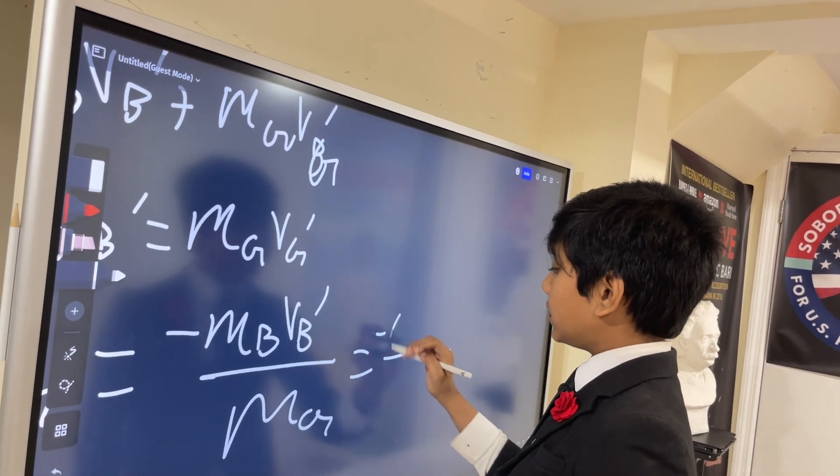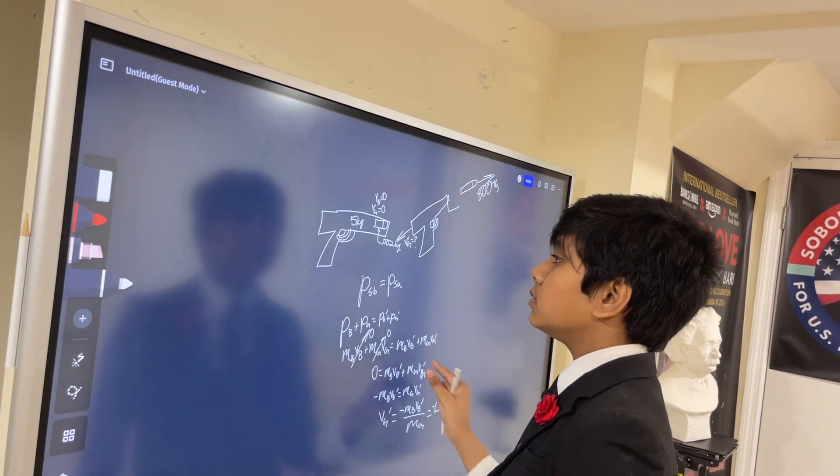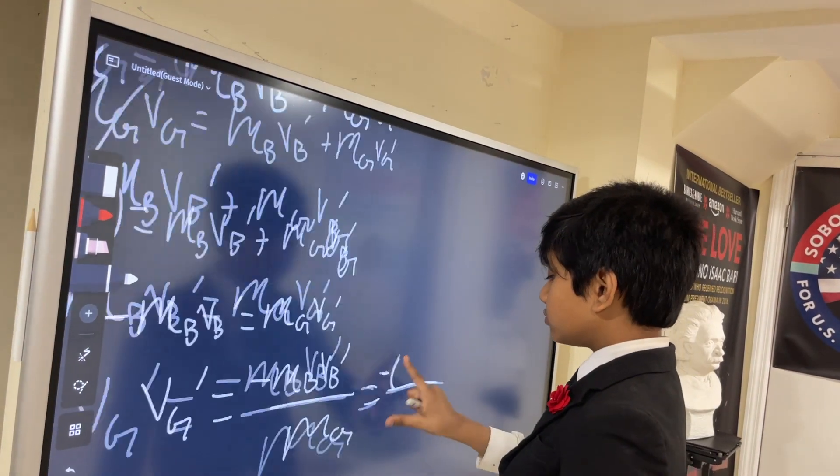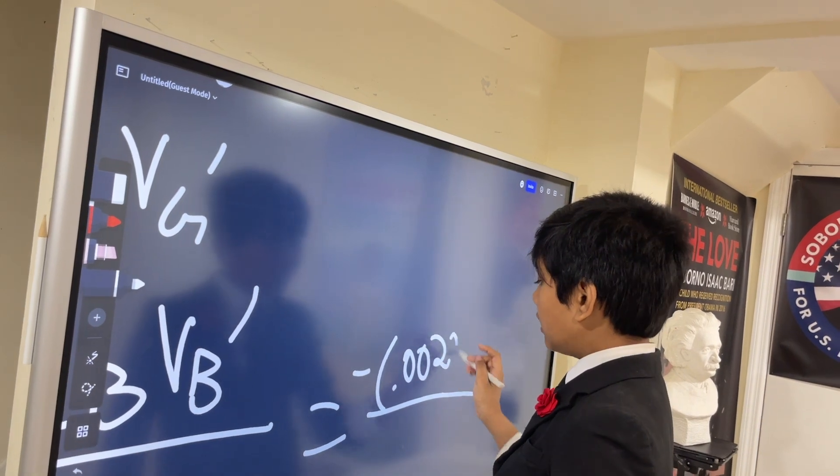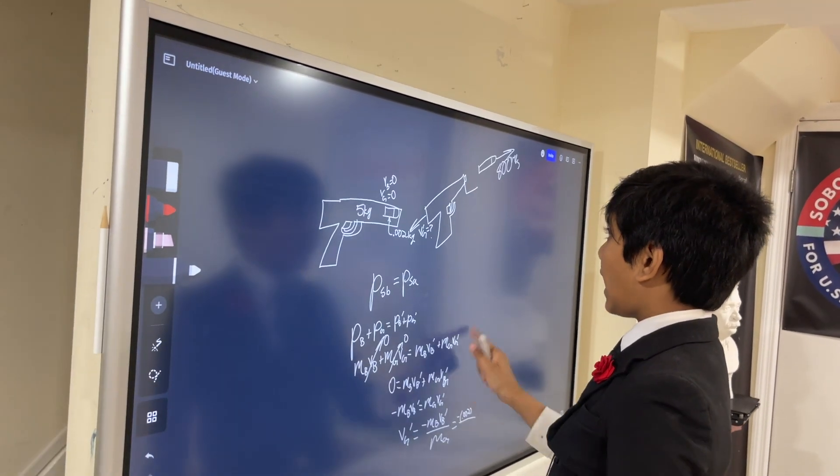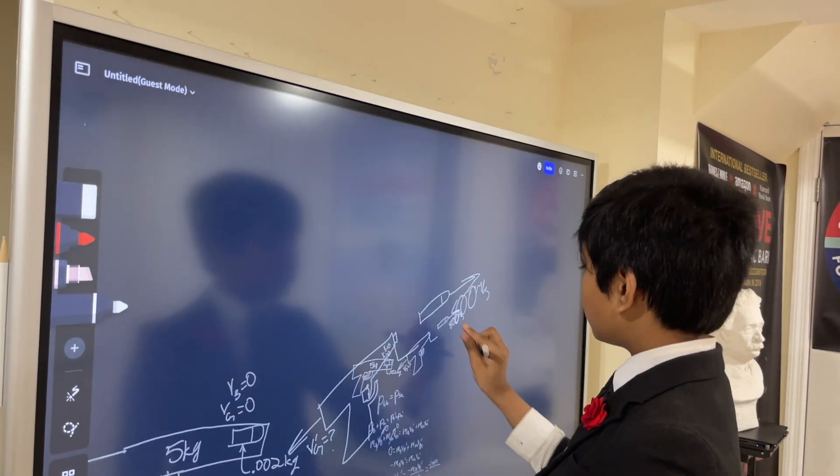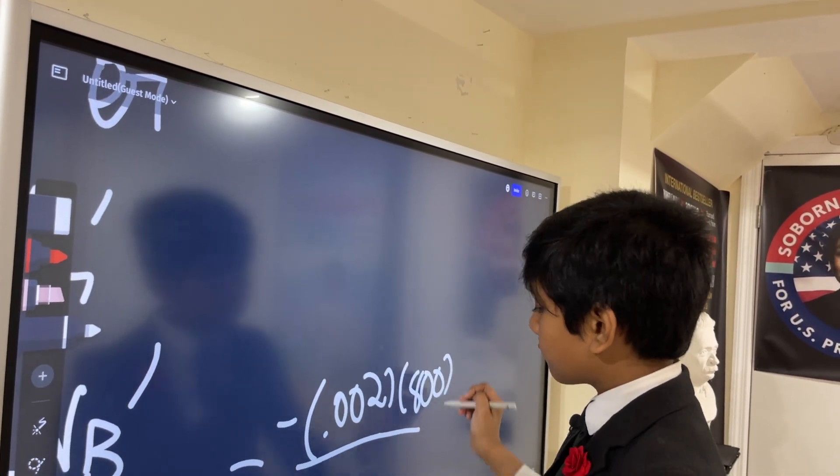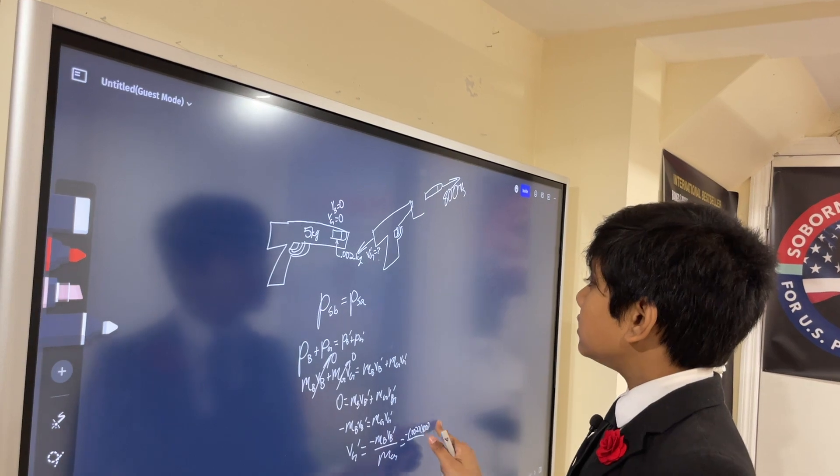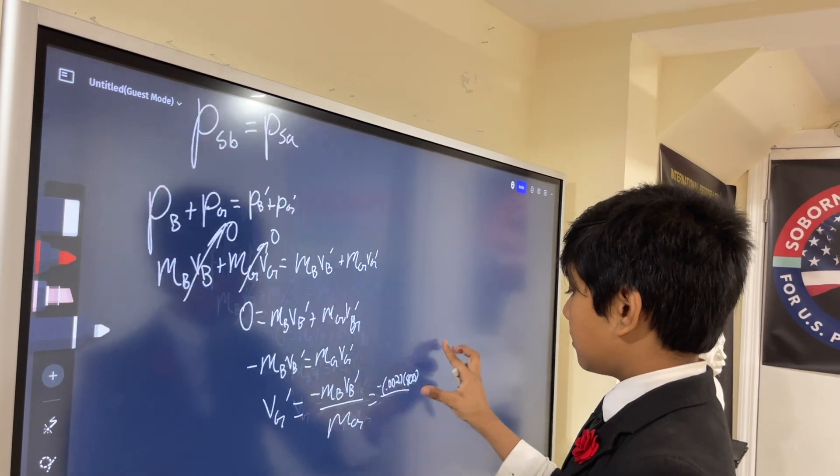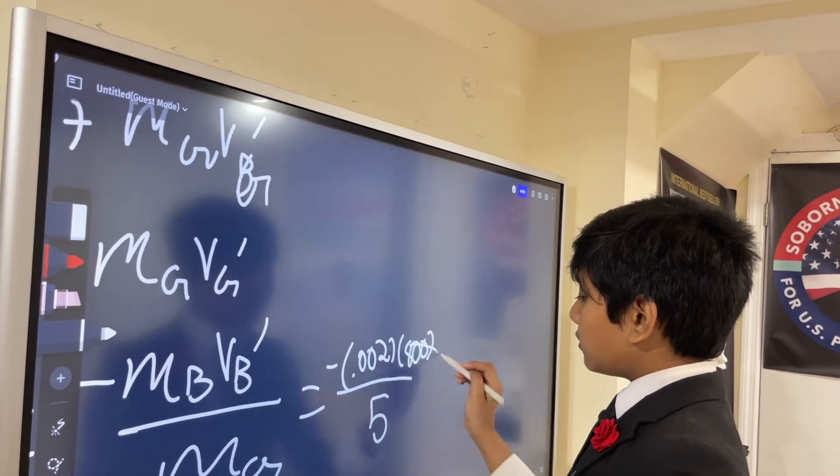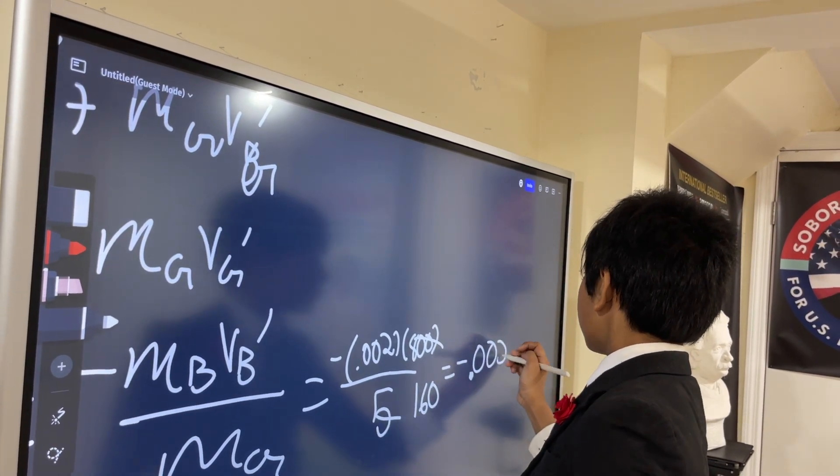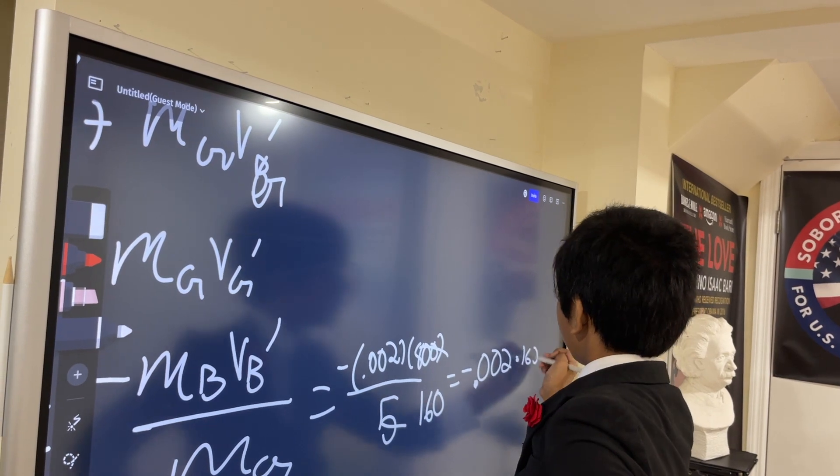So now, we have minus MB is going to be 0.002, VB prime. We know that after the gun is fired, it goes at 800 meters per second. And MG of the mass of the gun is simply 5. So now, 800 over 5 is 160. And this math problem should become pretty trivial from there.